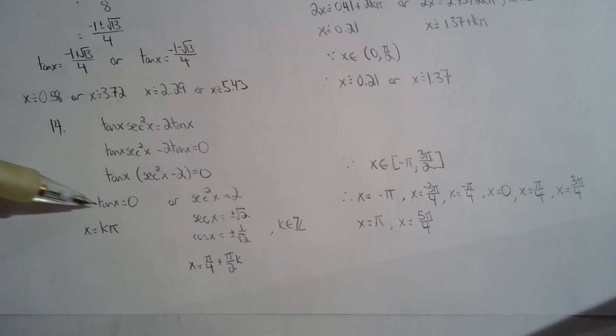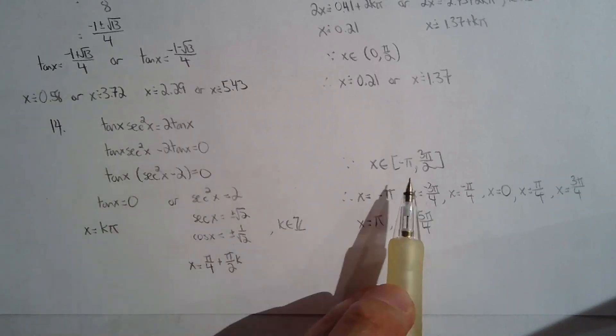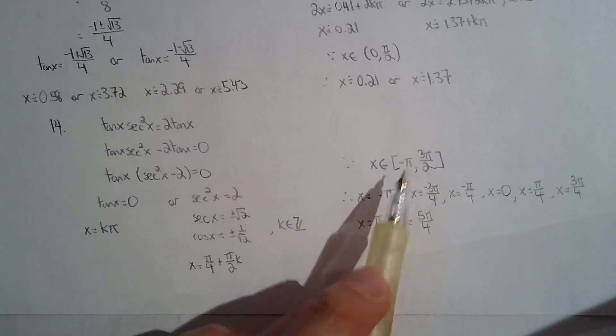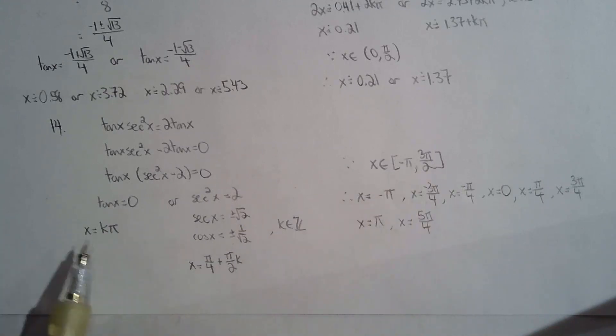Tan x equals 0 at k pi because a lot of students will just write 0, pi, and 2pi, but then they'll miss negative pi because the restriction is no longer 0 to 2pi. Whenever you see something funny happening with the restriction, or if there's no restriction, just gather all the solutions to the equation. You'll be much more likely to get the right answer. That's my advice.